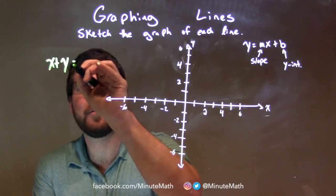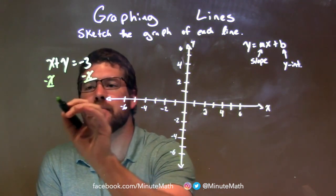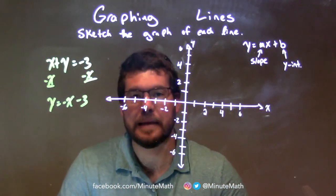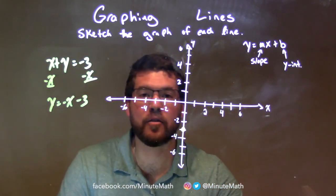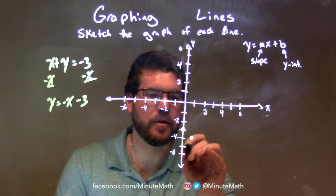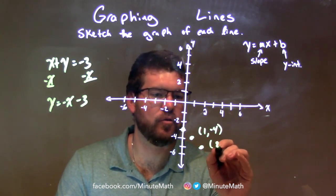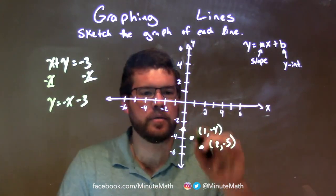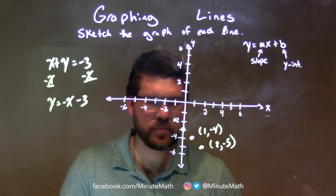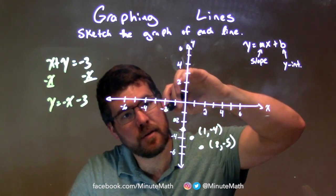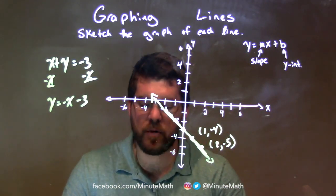x plus y equals negative 3. My goal is to get y by itself, so I subtract x from both sides: y equals negative x minus 3. Now we have it in slope-intercept form. Our y-intercept is negative 3 — 1, 2, 3, negative 3 right there. Our slope is negative 1 — down 1 over 1, down 1 over 1. The first point is 1, negative 4, and this one is 2, negative 5. We can also go up 1 to the left 1. We connect these dots to make a line and there we have our graph and final answer.